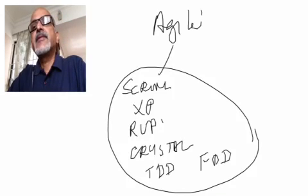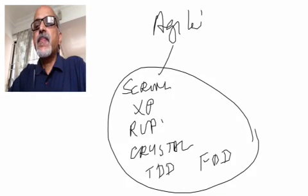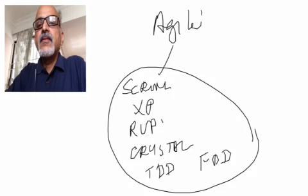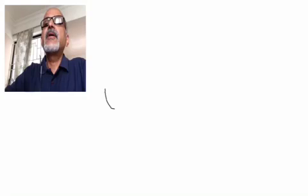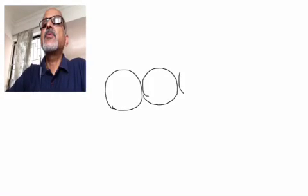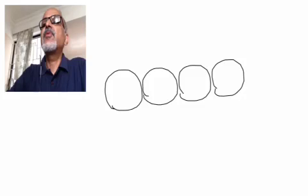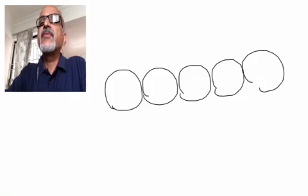In agile what happens is you go by iterations sprint 1, sprint 2, sprint 3, sprint 4, sprint 5 and within this there will be requirements collection.